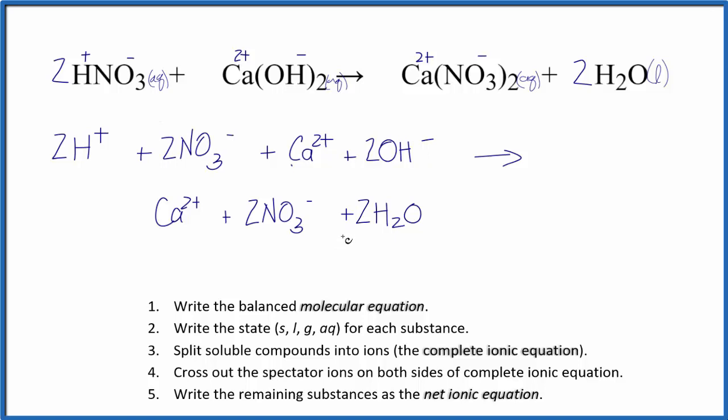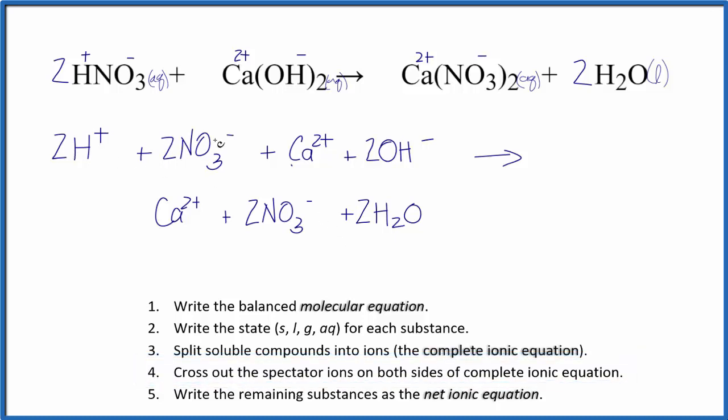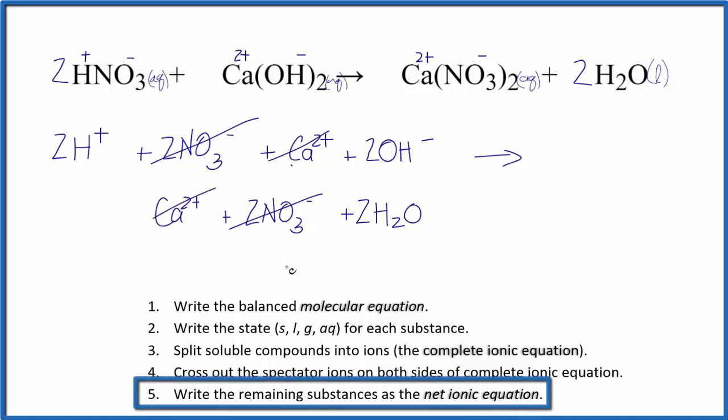From here, we can cross out what are called spectator ions. These are ions that are the same on both sides of the equation. So we can see that the NO3- appears on both sides of the equation, and the Ca2+, that does too. So we cross those out, and now we can write our net ionic equation.